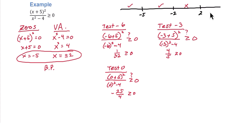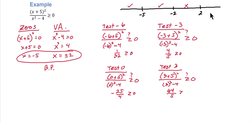Finally, we need to pick a number that is bigger than 2. Let's try positive 3. 3 plus 5 squared over 3 squared minus 4. Is that greater than or equal to zero? We get 64 fifths, which is definitely bigger than zero. So we'll keep that final interval since it's true.